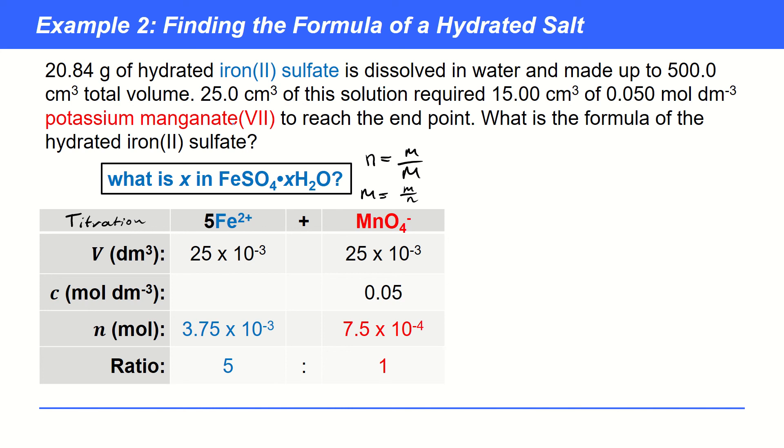And the titration involved 25 centimetres cubed of iron 2 sulphate. Now, we do know the mass of hydrated iron sulphate. We know that the mass here was 20.84 grams. However, that was actually for 500 centimetres cubed of the solution. And so, what we need to try and do with these numbers here is actually to work out the number of moles of Fe2 plus total. Now, how are we going to do that? It's going to be related to the number of moles of Fe2 plus titrated. But we also need to scale up. And the factor we scale up by is a factor of 500 divided by 25.